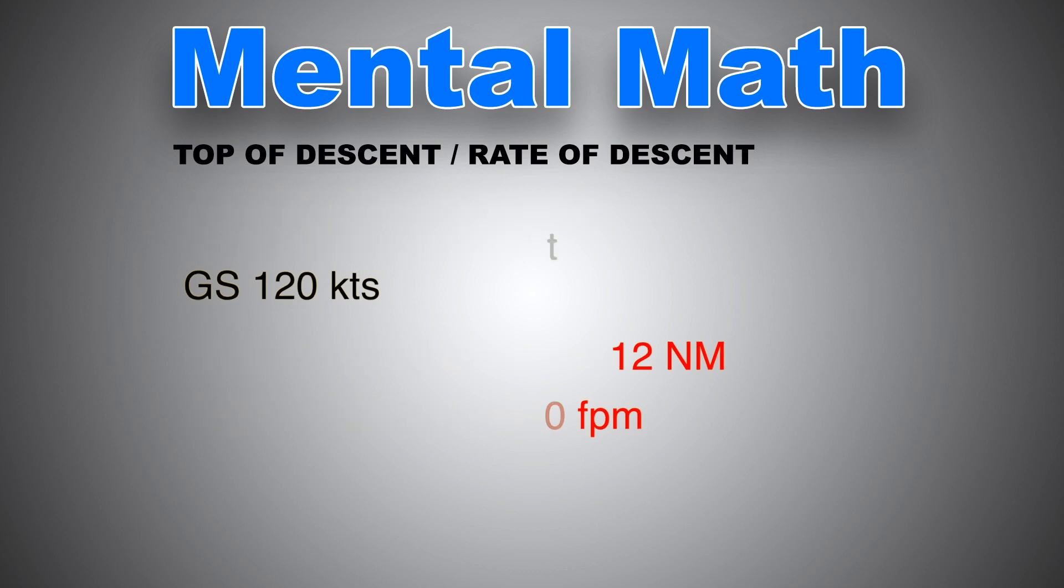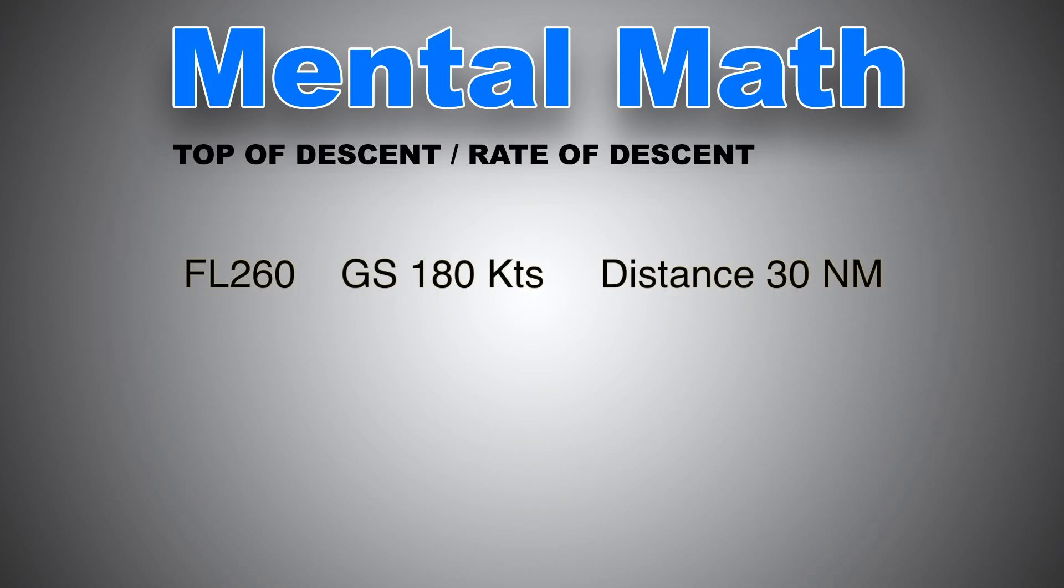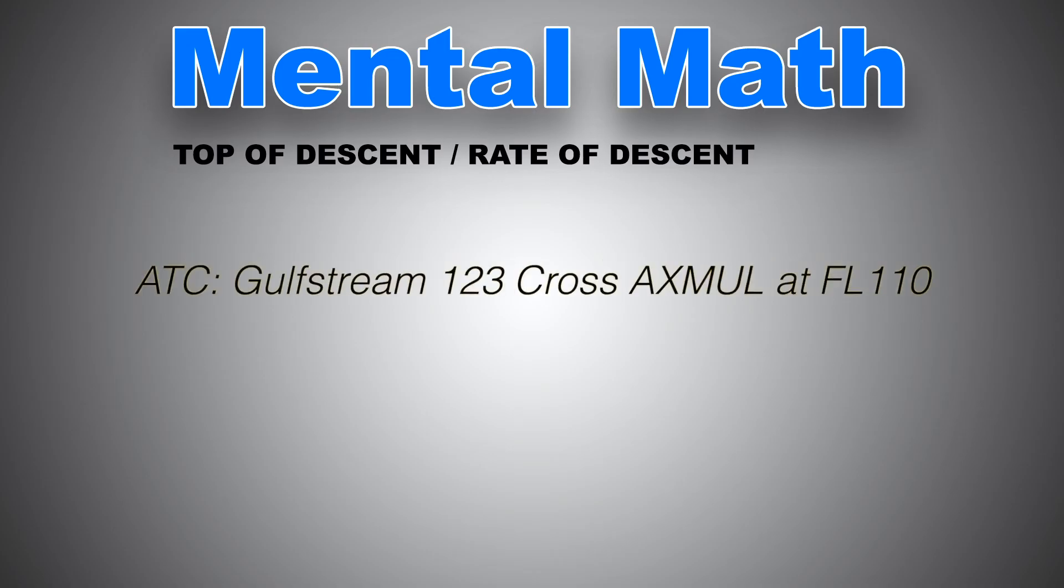Now the second method, which is more relevant to airliners and corporate jets. Now let's look at how to figure out the proper rate of descent to meet a crossing restriction. As an example, altitude flight level 260, ground speed of 180 knots, and a distance to a GPS waypoint, let's name it Axiom, so it's 30 nautical miles. ATC says, Gulfstream 123 cross Axiom at flight level 110.